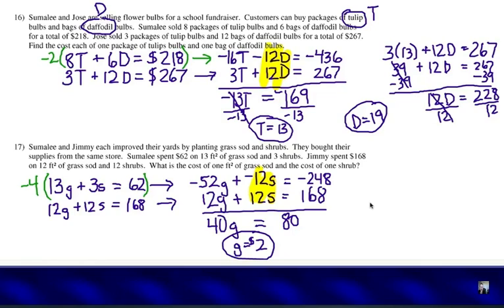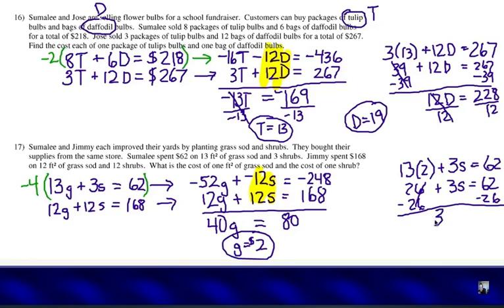Substitute it in there and let's choose the first equation. Instead of 13G, it's going to be 13 times 2 because we know that G equals 2 dollars plus 3S equals 62. Let's solve that. 26 plus 3S equals 62. Subtract 26 from each side. And we're going to have 3S equals 36. So S must be 12, 12 dollars for each shrub. So 2 and 12.